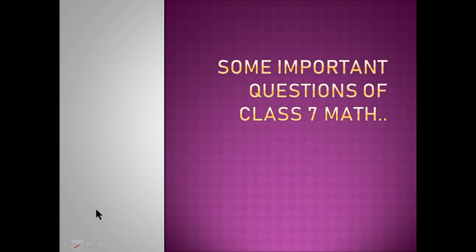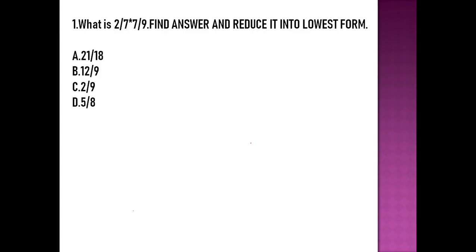Good morning to all, my name is Hatshoy. Today I brought some important questions of Class 7 related to math subject. The first question is: what is 2/7 multiplied by 7/9? We have to find the answer and then reduce it into the lowest form. We will write 2/7 multiplied by 7/9.